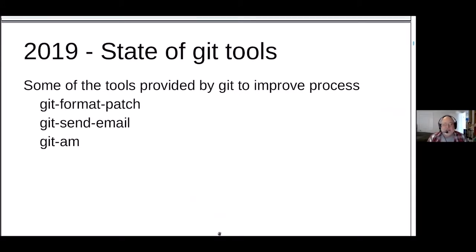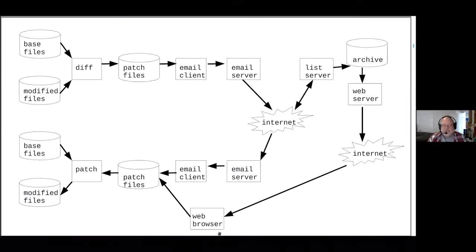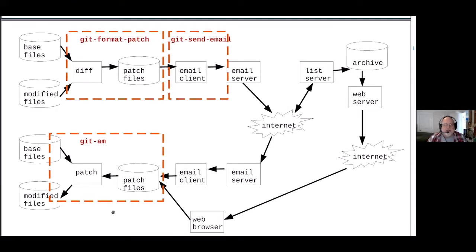As of 2019, we had some git tools that helped somewhat in solving some of those problems. Git provided several commands on the creation and sending end of that flow: `git format-patch` to create patches, `git send-email` to replace the email client, and `git am` to apply the received patches. In the diagram we can see where those git tools came into play — `git format-patch` creating patch files, `git send-email` replacing the email client, and `git am` applying those received patch files.